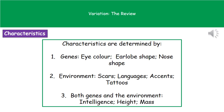Welcome to our review on variation. What we all have as individuals are a variety of different characteristics, and we need to understand what's going to determine what characteristics we show. There are three things that will determine our characteristics.